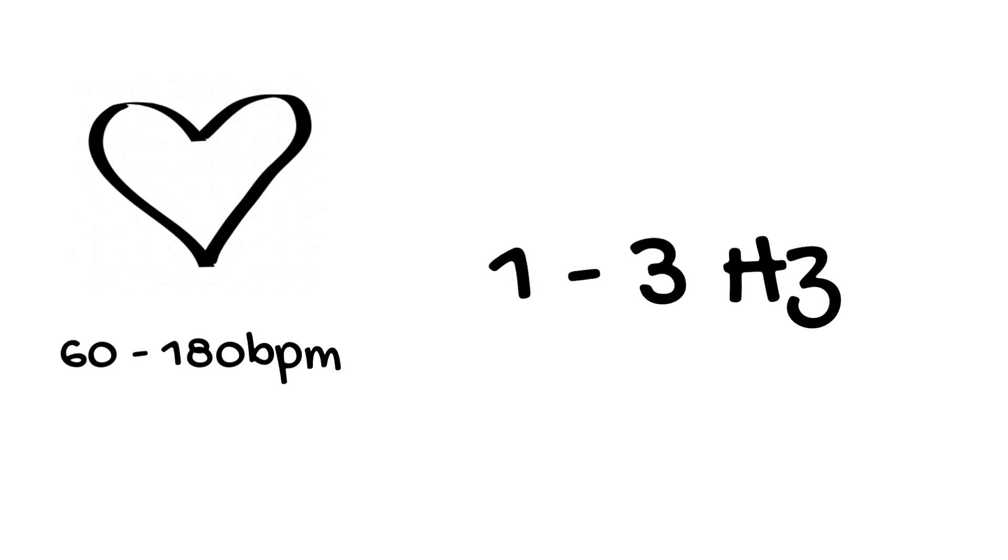Normal heart rate that we monitor is between 60 and 180 beats per minute. This is between 1 and 3 hertz. To stop resonance interfering with our signal, the natural frequency of our system has to be 8 times higher or 8 harmonics above the frequency we are measuring.